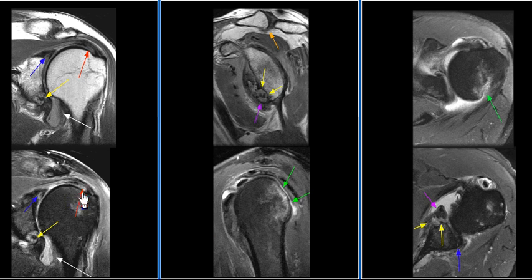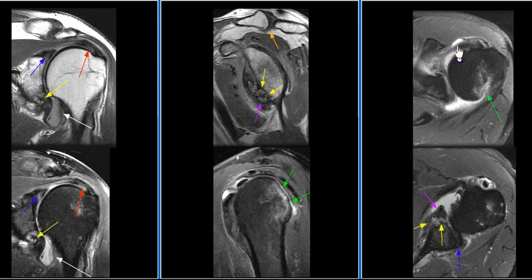There is fraying of the articular surface of the distal supraspinatus tendon and subscapularis tendinosis.